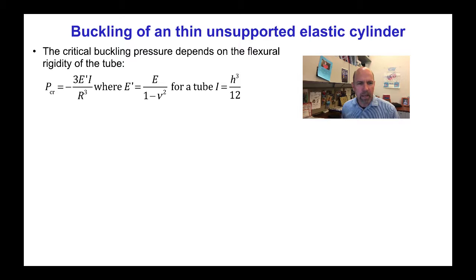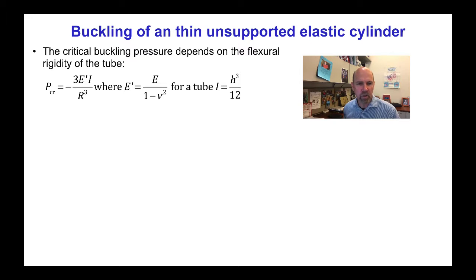That critical buckling pressure has been found to be minus 3E'I over R cubed, where the E'I term is familiar as the bending rigidity of a beam, except that E' is not E.